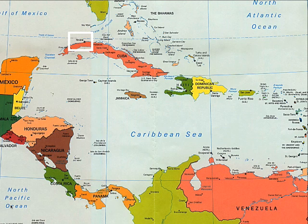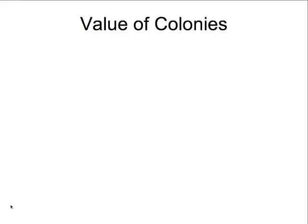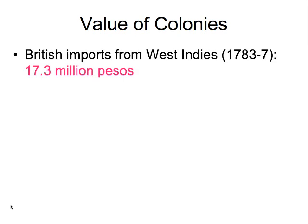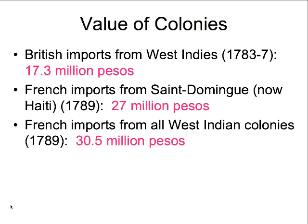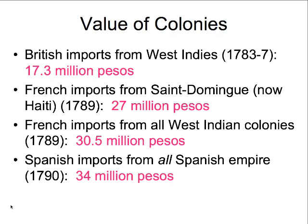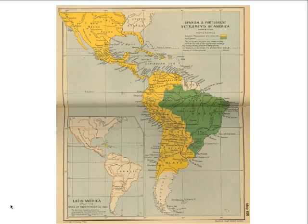While the figures are a little hard to come by in a comparative sense, the following numbers illustrate the problem faced by the Spanish. British imports from the West Indies into Britain valued about 17.3 million pesos in the 1780s. French imports from Saint-Domingue — from Haiti — were equal to about 27 million pesos, and including all French West Indian colonies, about 30.5 million pesos. But Spanish imports from all of the Spanish Empire in the Americas totaled only 34 million pesos. In other words, even at the end of the Bourbon period, the Spanish had not nearly developed their colonies to the same extent that the British or the French had.